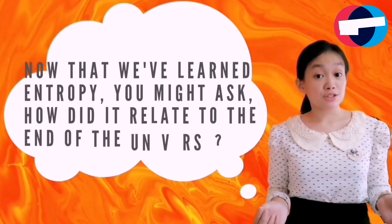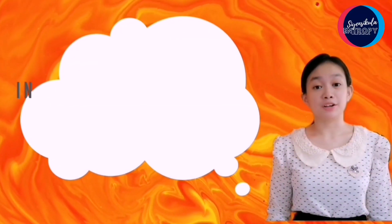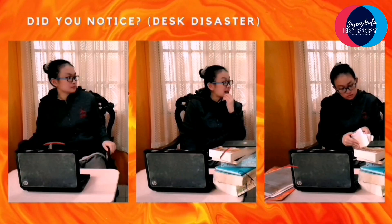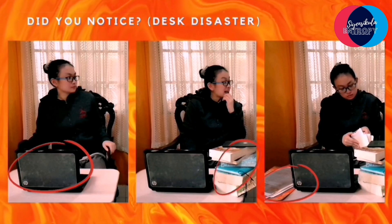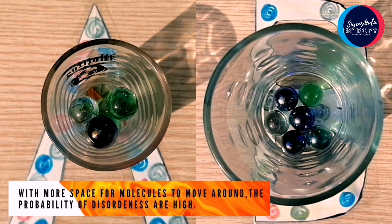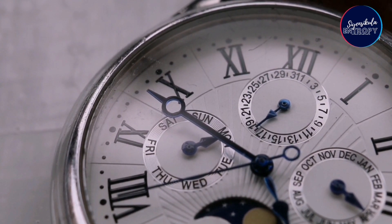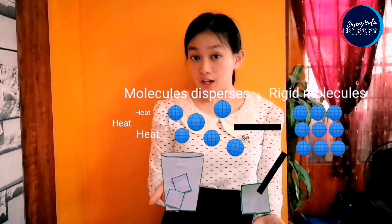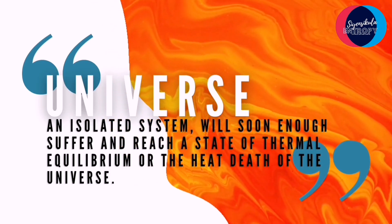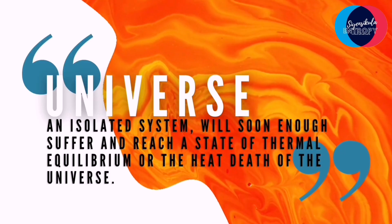Now that you've learned entropy, you might ask: how can it relate to the end of the universe? Everything! We first learned that an isolated system with a large quantity of entropy tends to lose order. Then we discovered that entropy increases with time. And finally, we learned that entropy strives for equilibrium. This important concept shows us that the universe, as an isolated system, will soon enough reach a state of thermal equilibrium — or the heat death of the universe.